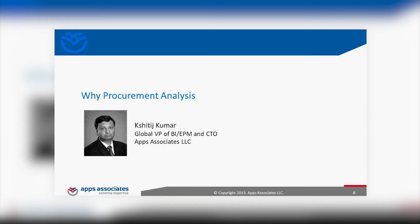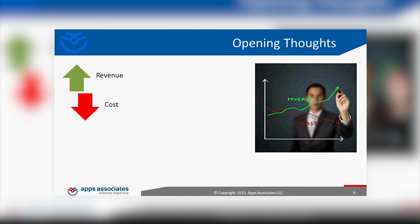Today we're jumping into why procurement analysis is so important. Any organization is always tracking revenue and cost, and the difference is profit — gross profit and net profit. The only way to increase gross profit is to increase revenue or manage costs. A big portion of cost is cost of goods sold, so how you purchase goods, which vendors you work with, and how you reduce procurement cycles has a very direct impact on cost.